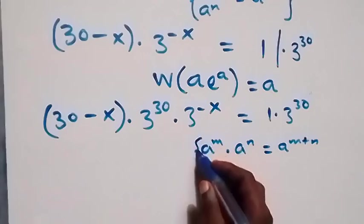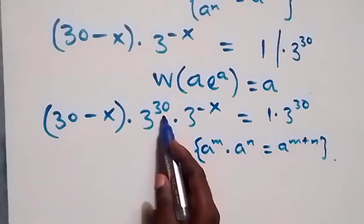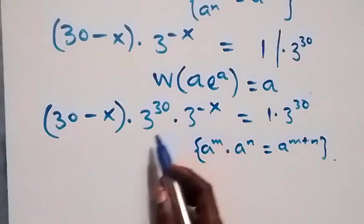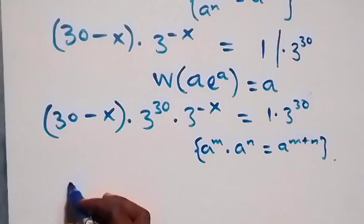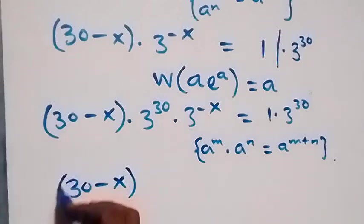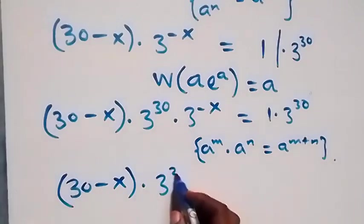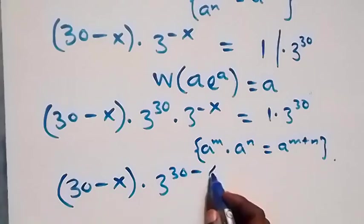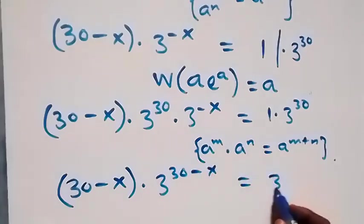When we apply the law of indices here, 3^30 times 3^(−x) gives 3^(30−x). So we have 30 minus x multiplied by 3 raised to power 30 minus x equals 3 raised to power 30.